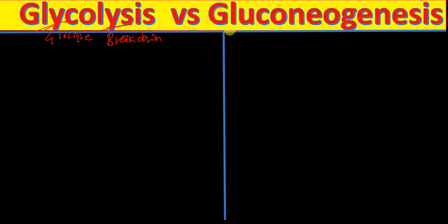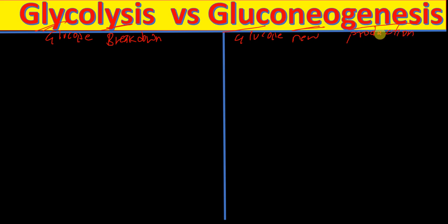In gluconeogenesis, 'gluco' means glucose, 'neo' means new, and 'genesis' means production or synthesis. That means gluconeogenesis refers to the production or synthesis of new glucose molecules.